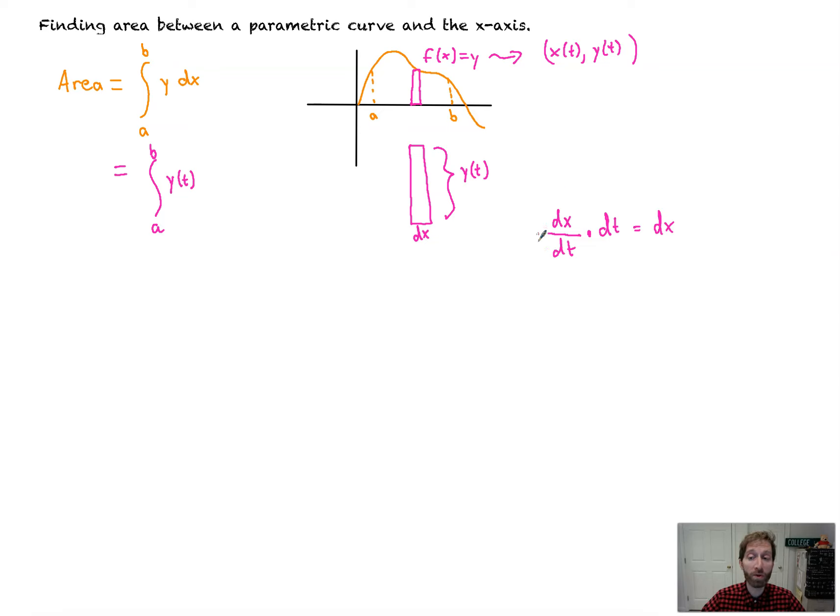Think about it again. The rate at which we're traveling in the x direction times the amount of time we travel for equals the amount of displacement in the x direction. So dx becomes dx/dt times dt, or as I like to often write it, x'(t). That's dx/dt times dt. And that's your formula.